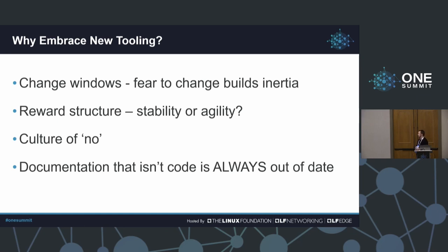A lot of that has been because the reward structure within networking has fundamentally been focused on stability, not agility. But in our modern infrastructure, with businesses operating as they do today, that dynamic really needs to change. Businesses need to view the network as something that enables business agility, not hinders it. Traditionally, focusing on stability over agility has fostered a culture of no — where application teams can't get deployments accommodated because the change window is two months away. We need to rebalance that for the sake of the business and our relationships with counterparts.